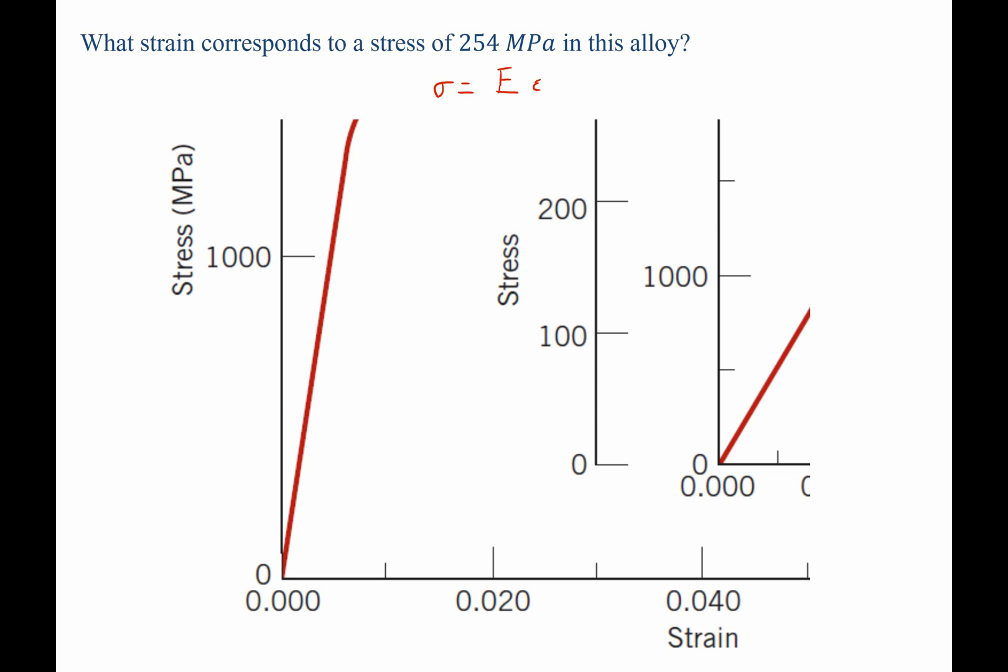We know that our stress is 254 megapascals. So if this goes up to 1,000, halfway would be 500, and half of that would be roughly 254. Drawing this line over and dropping a tie line down, we can estimate where it is on this plot. I find, with my best estimate, that it's around 0.0025.